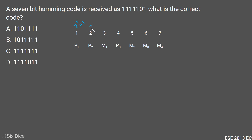Parity bit 1 is placed at position 2 to the power 0, which equals 1. Parity bit 2 is placed at position 2 to the power 1, which equals 2. And parity bit 3 is placed at position 2 to the power 2, which equals 4.